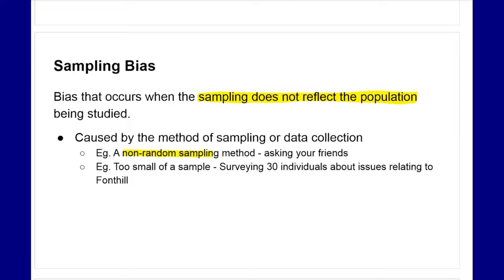One thing that might create sampling bias is a non-random sample or sampling method — how we select the individuals to complete our survey. If it's non-random, such as asking your friends, that can affect the data we collect and may not reflect the population. What you and your friends think may not be what the entire population thinks. So when creating a survey, you want to make sure you are asking a random group of people.